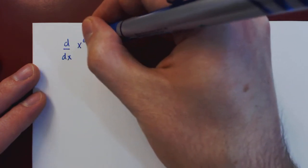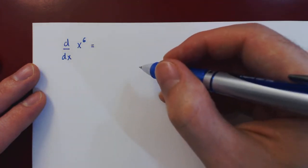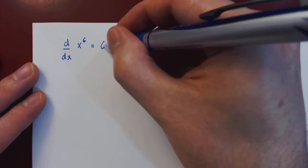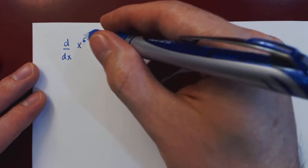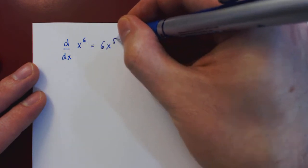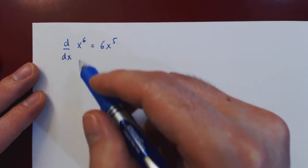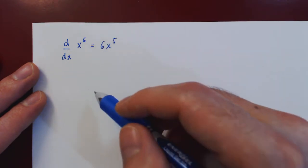So what if we ask for the derivative with respect to x of x to the 6? Well, by the power rule, the derivative is 6 times x to the 6 minus 1, which is 5. So, the derivative of x to the 6 is 6 times x to the 5.